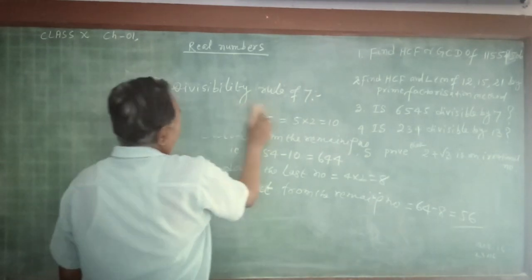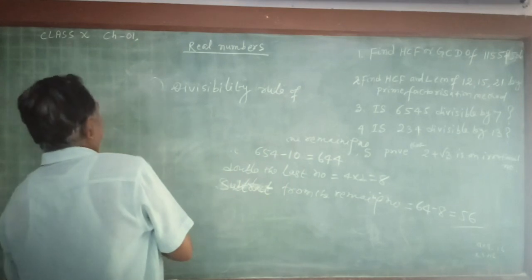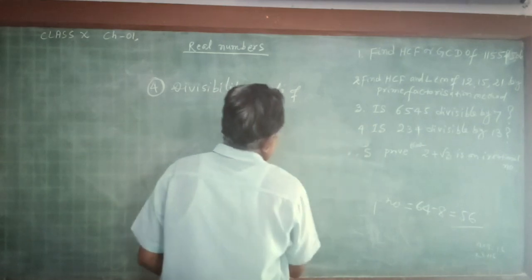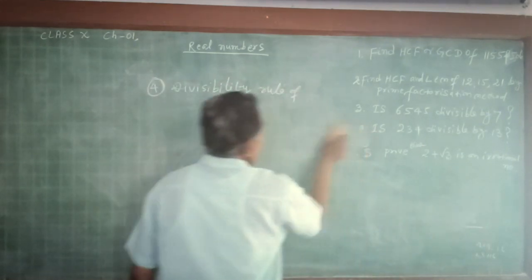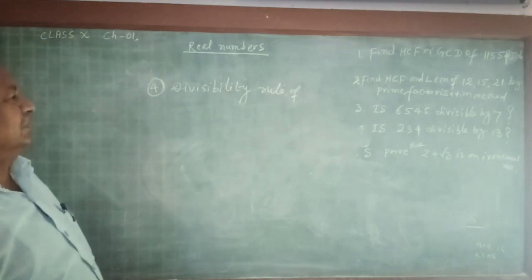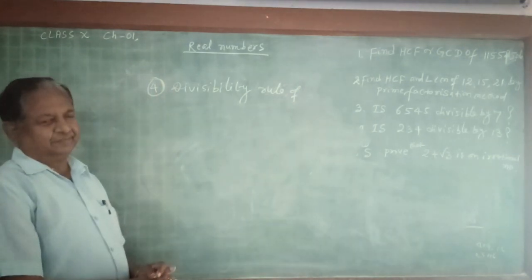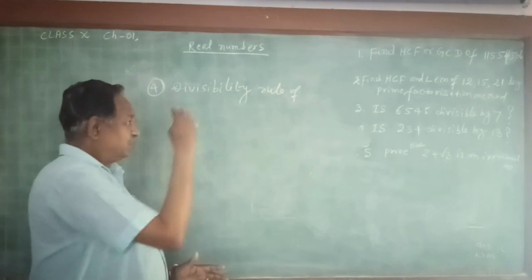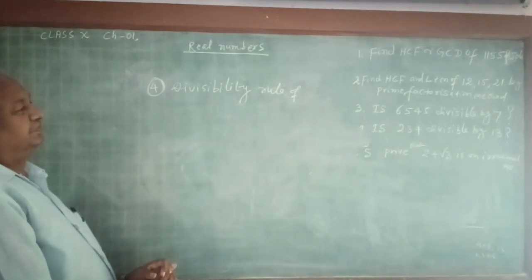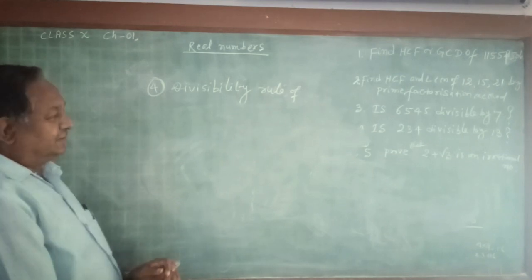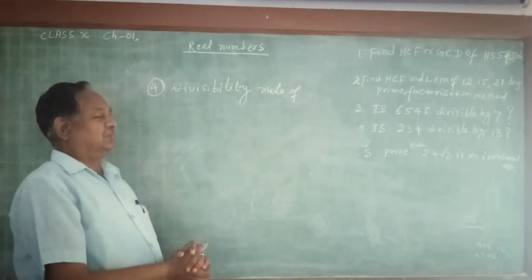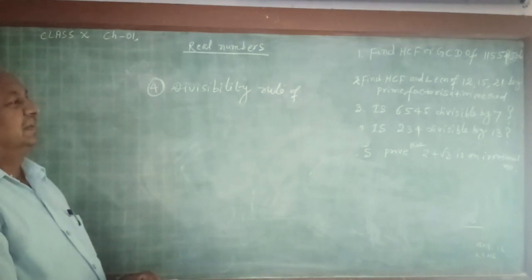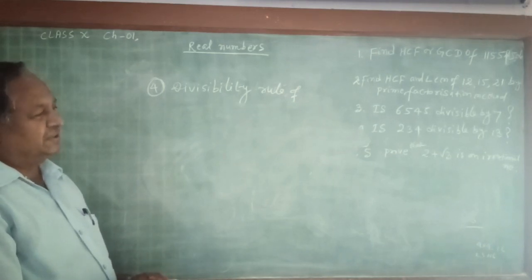Now divisibility rule of 13. Question number 4: Is 234 divisible by 13? This rule says that make 4 times the last digit and add to the remaining number. If the result is divisible by 13, then the number will be divisible by 13.